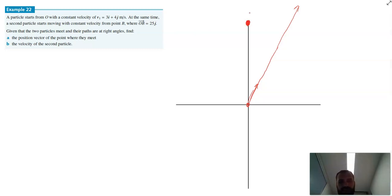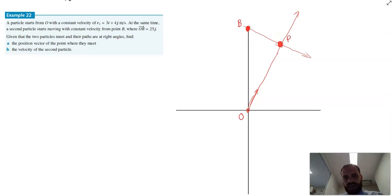Now, given that the two particles meet, so they're going to cross over at some point, and their paths are at right angles, find the position vector of the point where they meet. So we need to find that point. If we find that point, we've found the position vector. And we also need to find the velocity of the second particle. Probably the key insight here is that their paths are going to be at right angles, which means that their velocity vectors dot product is going to be equal to zero.